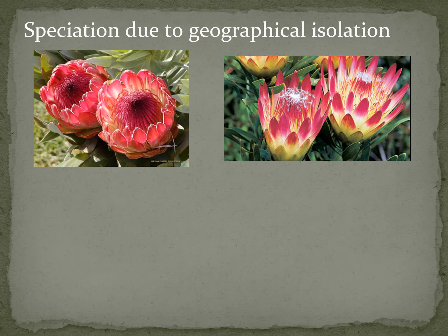We've looked now at speciation and according to the guidelines, you need to be able to explain speciation through geographic isolation in any one of the following: either the Galapagos finches, Galapagos tortoises, plants on different land masses, or any other example of mammals on different land masses. You'll find this from page 290 to 294. Effectively, you can look at any one of them and you don't need to know all of them off by heart — you just need to know one of them.